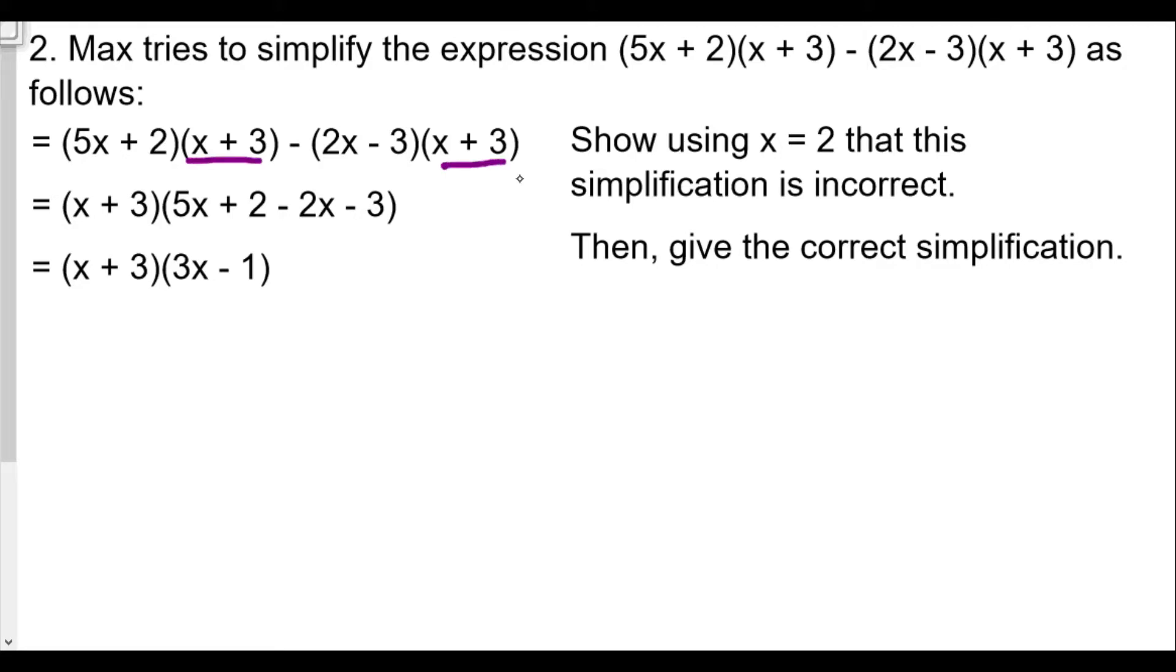So he factors out the (x + 3). It looks okay. My only thing in this case is that what's left over as the greatest common factor is going to be 5x + 2 and that totally makes sense. The problem is that it should be in this case minus (2x - 3), meaning minus the whole thing. So we're supposed to plug in x equals 2 and show the simplification is incorrect. So why is this error made? How does it affect everything?